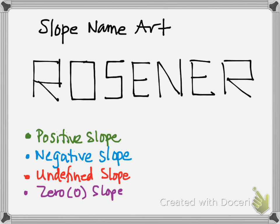So to do a positive slope, I'm going to find all the lines that have a positive slope. Looking at the way my name is written, I don't have one single positive slope — not one. A letter like M would have a positive slope, but I didn't have that, so I have no positive slope.